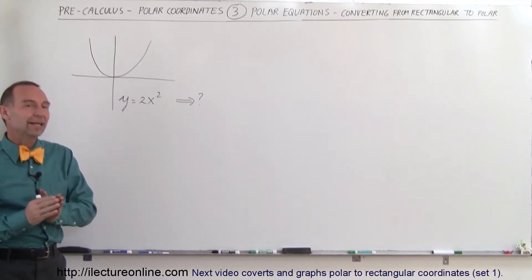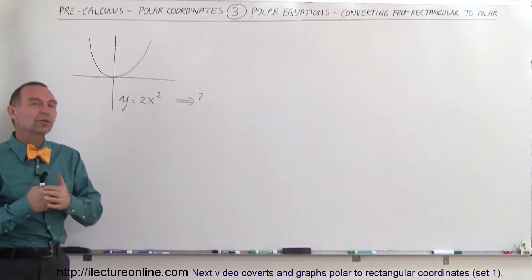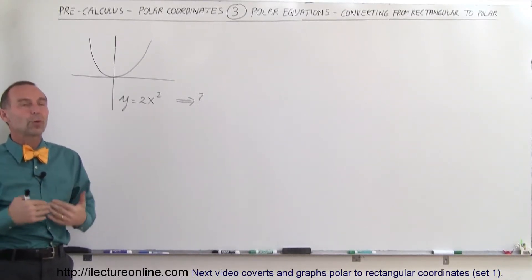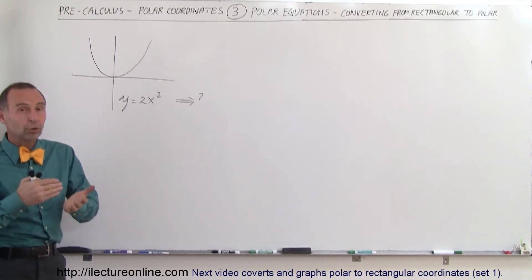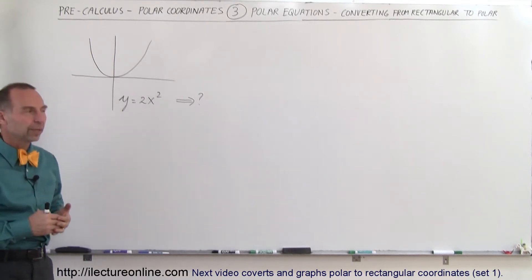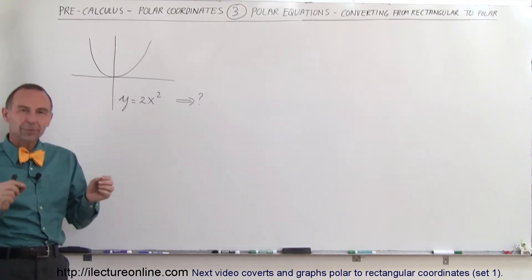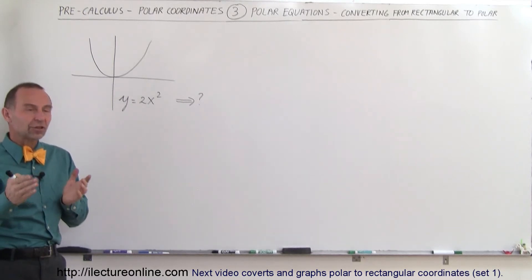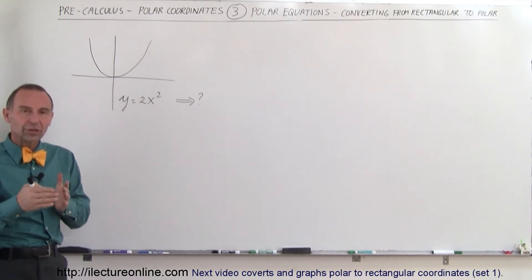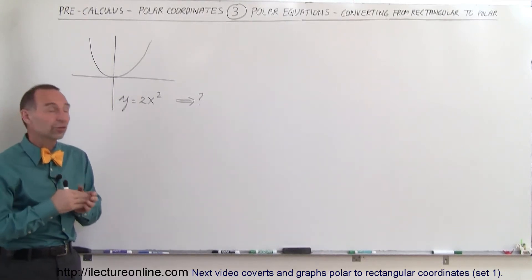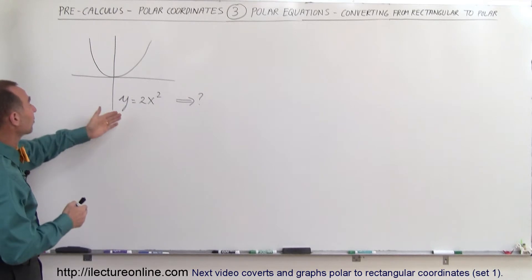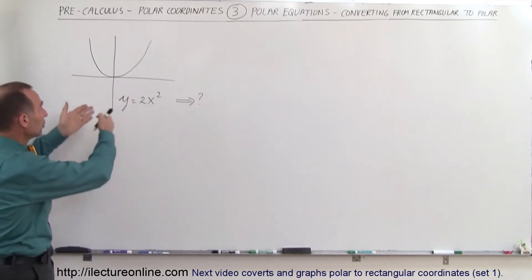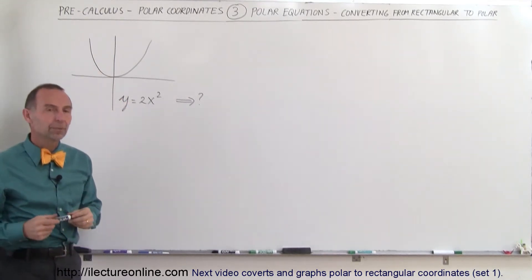Welcome to ElectronLine. In this video we're going to take a look at what we call polar equations — equations in polar coordinates. To help us understand them, we're going to convert an equation in Cartesian coordinates to polar coordinates, an equation we're very familiar with: y equals 2x squared, which we know to be a parabola.